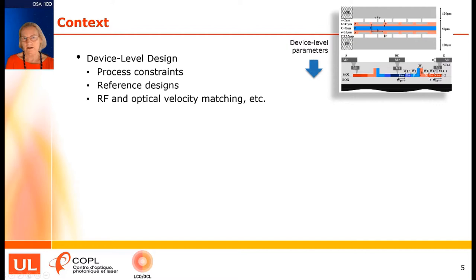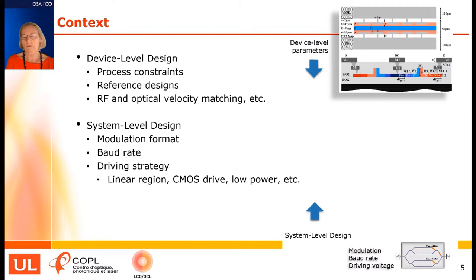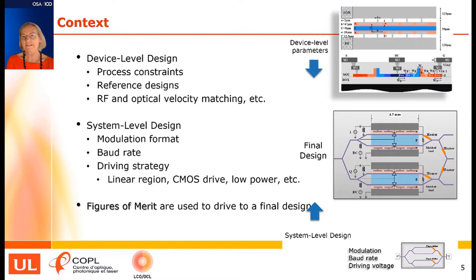Here is a typical design for a Mach-Zehnder modulator. There are many device-level parameters we have to choose in designing our modulator — process constraints, reference designs, and special enhancements such as RF and optical velocity matching. Contrast this with the system level, where we take this designed modulator and use it with a particular modulation format, targeting a specific baud rate and a certain driving voltage — for instance, keeping our driving voltage down to two volts to make it compatible with a CMOS driver. These two approaches — device-level parameter choice and system-level design — should be combined to optimize performance.